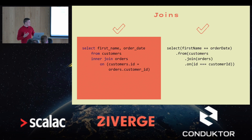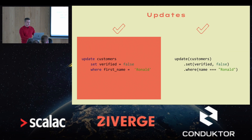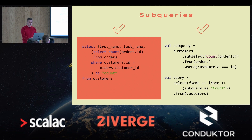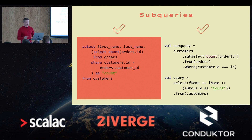Here's an example of joins. If you're familiar with SQL, this should feel very natural to write — you can even use your IDE's auto-completion to guide you. We also have updates, which follow the same story: it looks like SQL and it's typesafe. There's a simple delete example as well, plus a more complex example of subqueries, showing that ZioSQL supports much more than just simple updates or deletes.